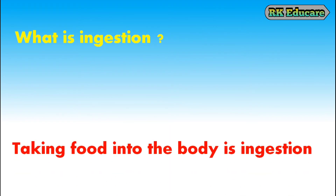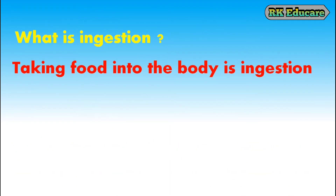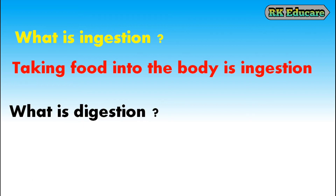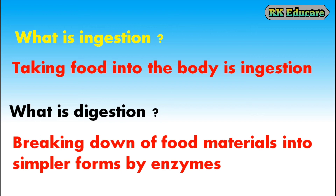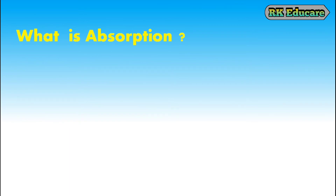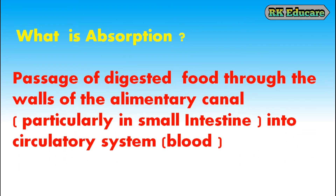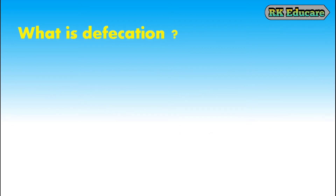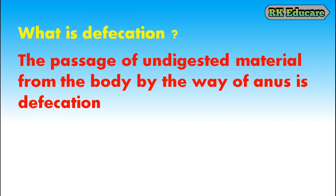What is ingestion? Taking food into the body through the mouth is called ingestion. What is digestion? Breaking down of food materials into simpler forms by enzymes is called digestion. What is absorption? The passage of digested food through the walls of the alimentary canal, particularly the small intestine, into the circulatory system is called absorption. What is defecation? The passage of undigested material from the body by way of the anus is called defecation.